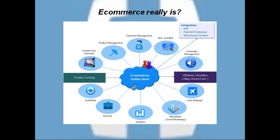Next, auto shipping — based on FedEx, DHL, UPS, and other services, auto shipping of products from one part of the continent to another has become really easy. Newsletters: suppose you are on an e-commerce website and a product is out of stock. You can subscribe to that product so that when new stock arrives, you get notified and can easily go buy it.